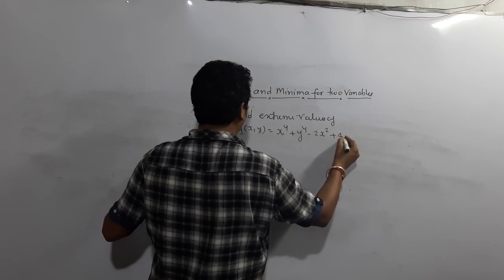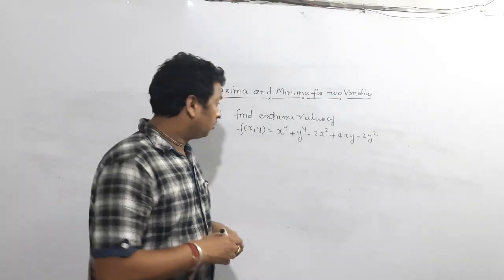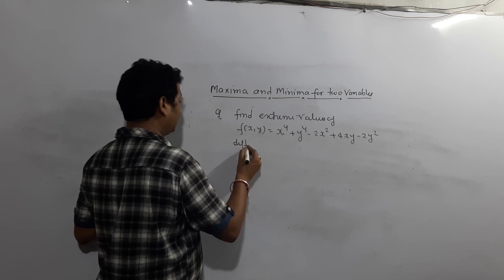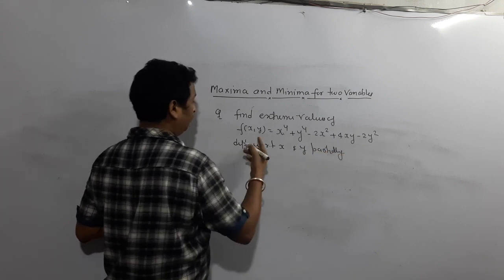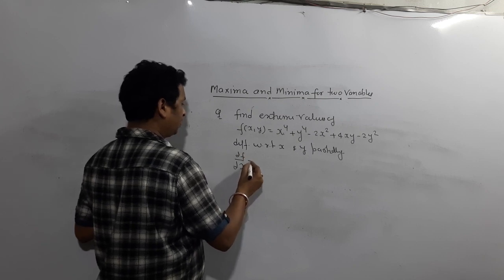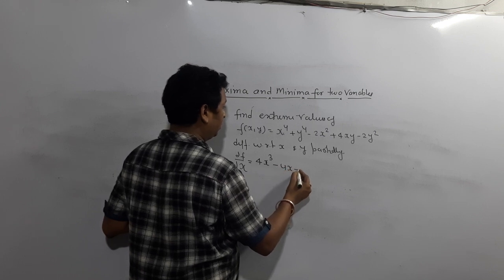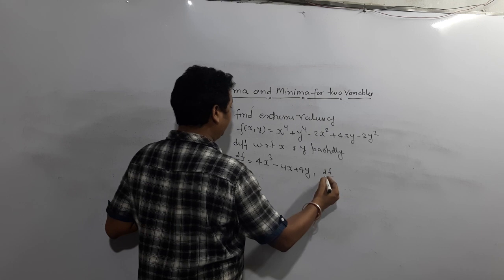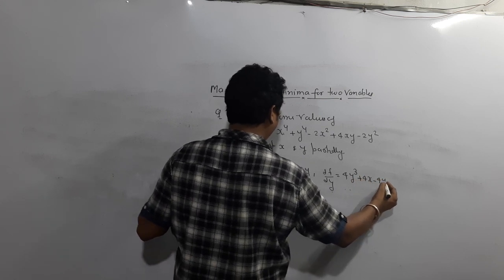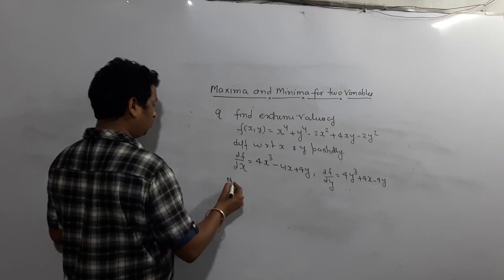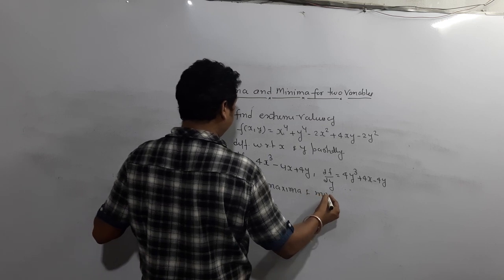So this is the overall process. Find ∂f/∂x and ∂f/∂y, set both equal to zero, solve to get points (x1,y1), (x2,y2), (x3,y3). Find R, S, T for each point. Check: if RT − S² > 0, then if R > 0 the point is a minimum — put (xi, yi) into f(x,y) to get the minimum value. If R < 0, that point is a maximum. This is how we calculate maxima and minima.